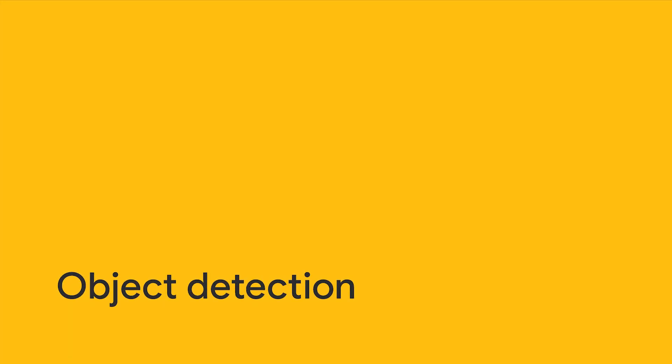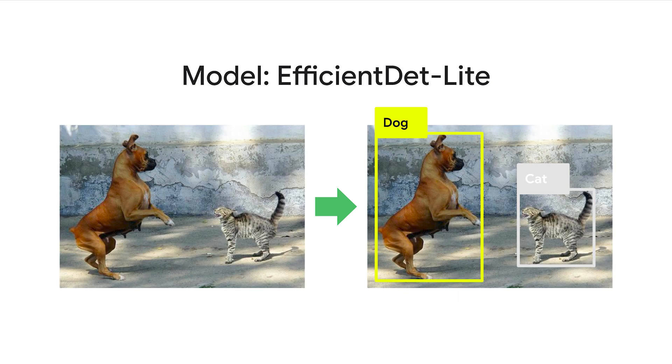Next, let me show you how to recognize objects in images or videos captured by the Raspberry Pi camera. In machine learning terms, this task is called object detection. We use a model called EfficientDet-Lite for object detection. This model can recognize 70 types of different objects. The model takes an image as input and returns a list of objects that it recognizes, together with the location of the objects in the image.